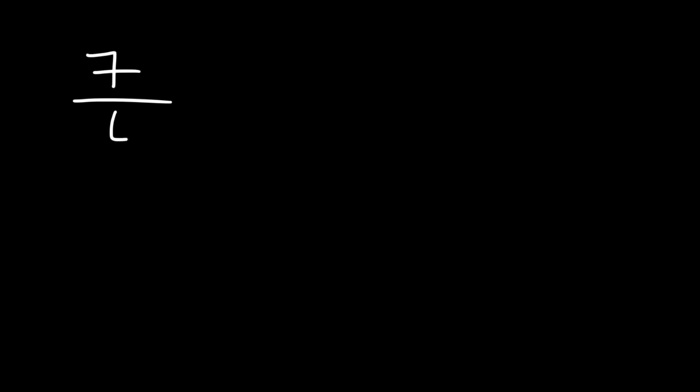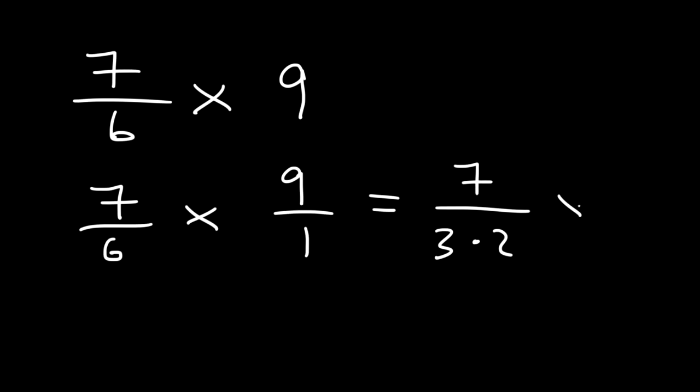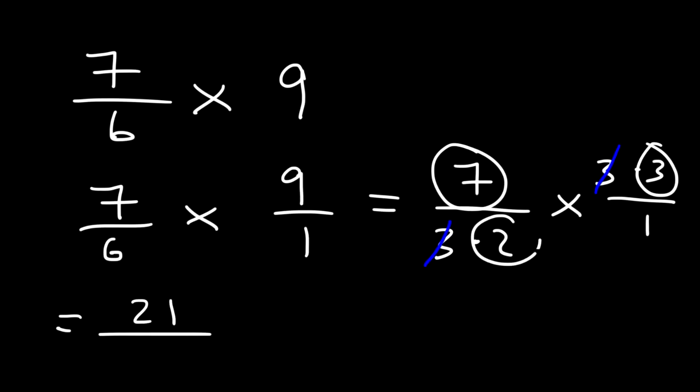Try this one: 7 over 6 multiplied by 9. Go ahead and work on that example. So let's rewrite 9 as 9 over 1. Now this one we could simplify before we multiply if we want to. 6 we can write that as 3 times 2. And 9 is 3 times 3. So we can cancel a 3. And so we're left with 7 times 3 which is 21. And 2 times 1 which is 2. So the answer is 21 over 2.